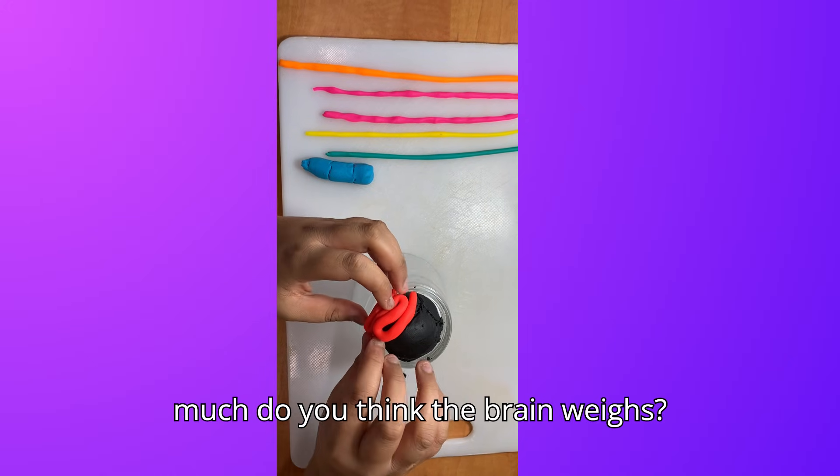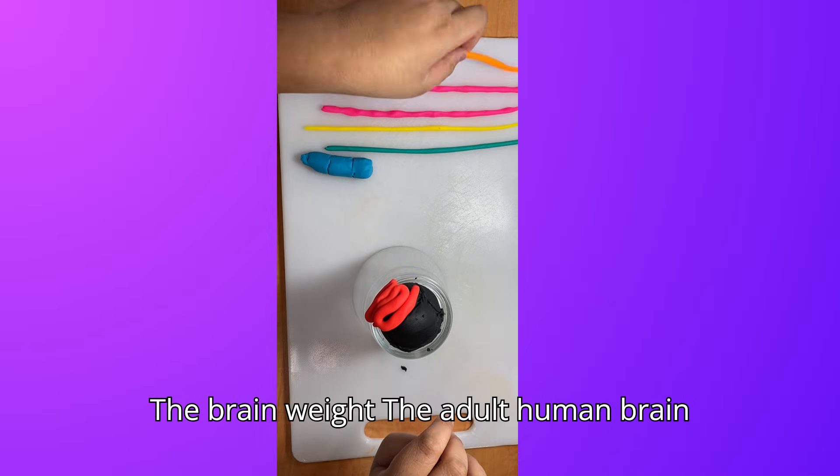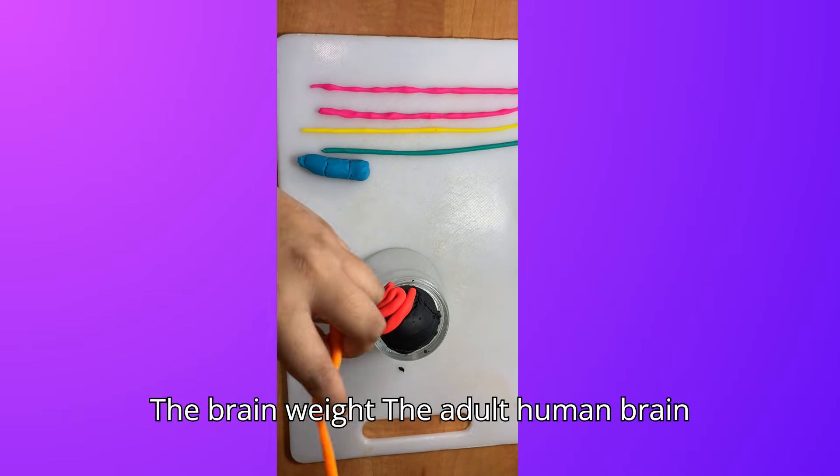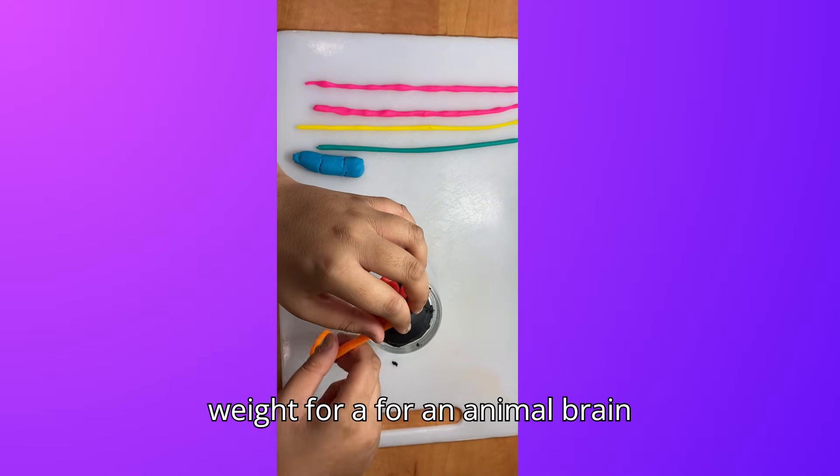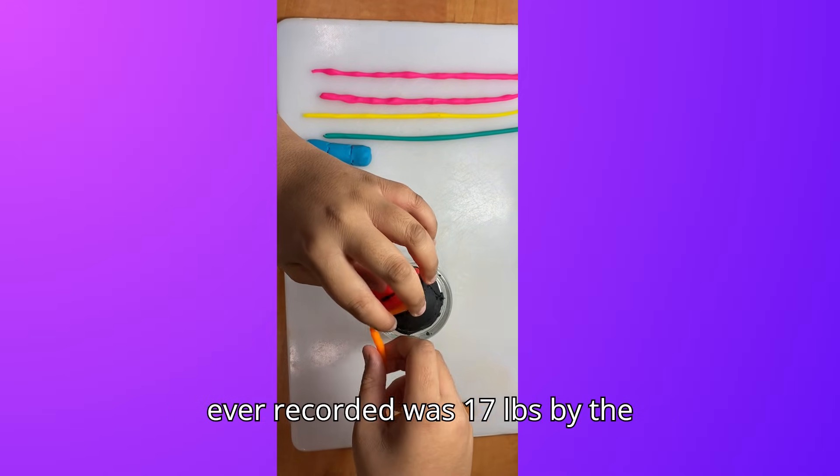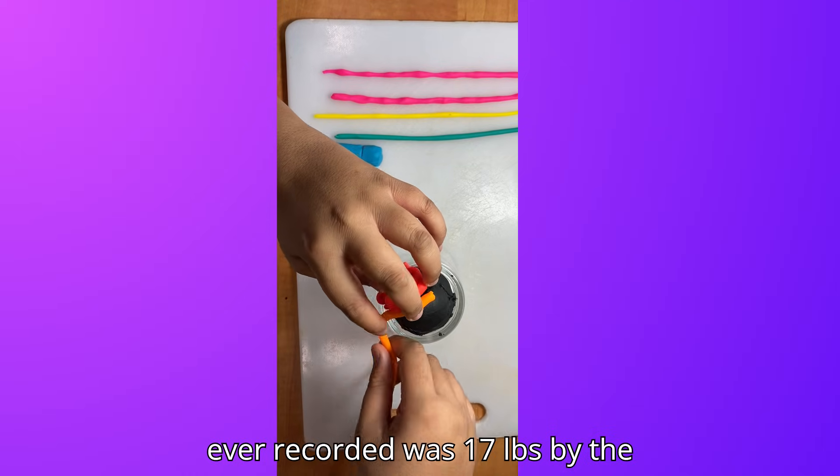How much do you think the brain weighs? The adult human brain weighs about 3 pounds and the maximum weight for an animal brain ever reported was 17 pounds by the sperm whale.